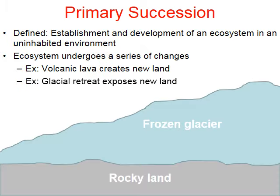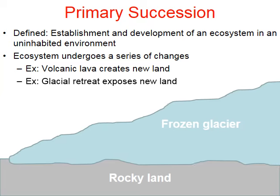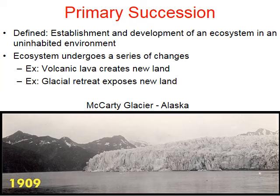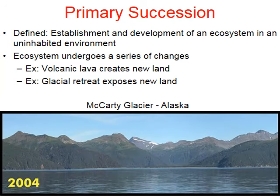Another way in which primary succession can proceed is through glacial retreat. Here we have a frozen glacier, and as the seasons change and temperatures warm up, this glacier is retreating and exposing new barren land. After primary succession, we're going to see a wilderness ecosystem begin to grow in this area. Here's a great picture from 1909 taken from a glacier in Alaska — nearly a hundred years later, the glacier has retreated and the barren rock is now very full of green vegetation.